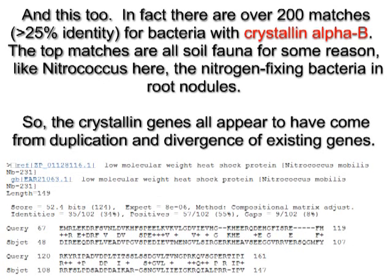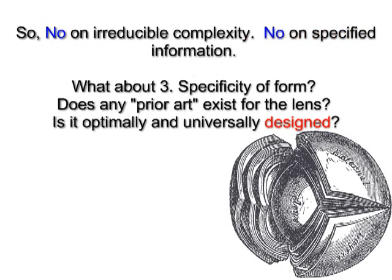In fact, there are over 200 matches for bacteria with crystallin alpha-B. The top matches are all soil fauna for some reason, like Nitrococcus, the nitrogen-fixing bacteria in root nodules. So the crystallin genes all appear to have come from duplication and divergence of existing genes. No on irreducible complexity.